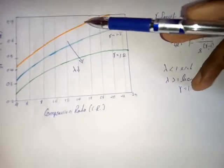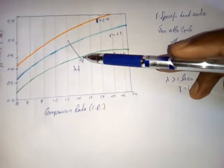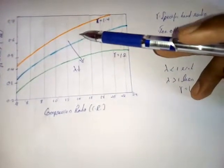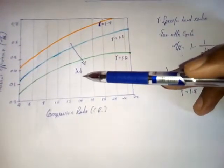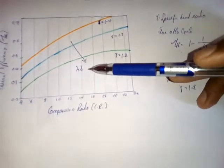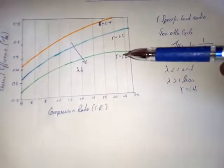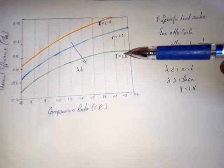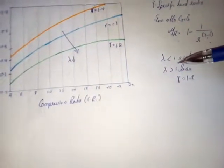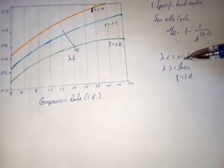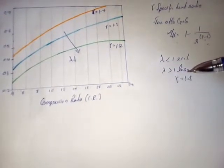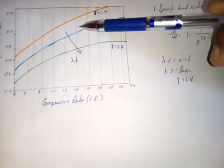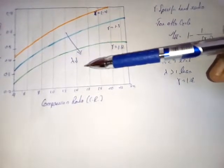The arrow shows that the mixture is getting richer as the specific heat ratio reduces. Lambda, which is the ratio of actual air-fuel ratio to the stoichiometric air-fuel ratio - for lambda less than 1, the mixture will be rich; for lambda greater than 1, the mixture will be lean. So as the specific heat ratio reduces, lambda gets less than 1 and the mixture gets richer.